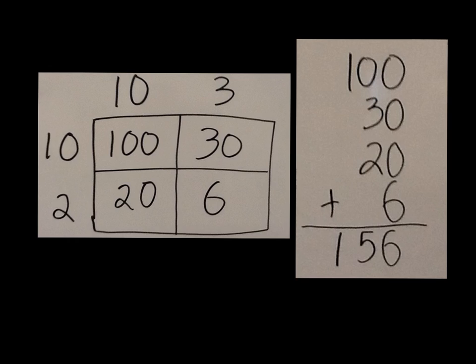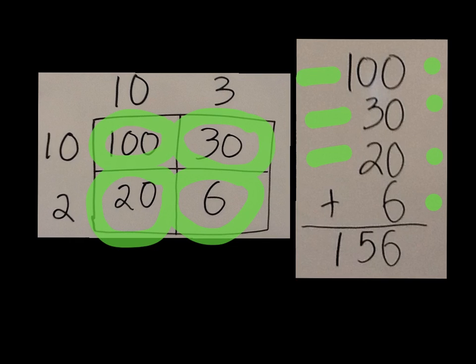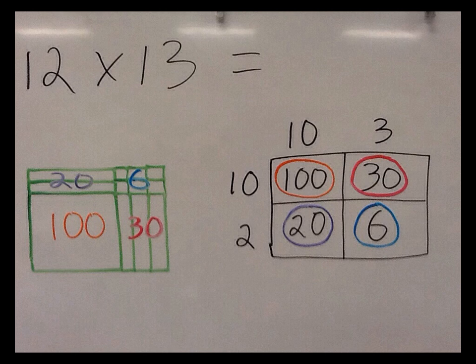And just like before, we're going to take the first partial product, move it over here, the second partial product, the third partial product. I did them out of order because I like to do biggest number to smallest number. Doesn't matter how you add them up, right? We add the ones column and get 6, the tens column and get 5, and the hundreds column and get 1. So our answer is 156, just like it was last time.